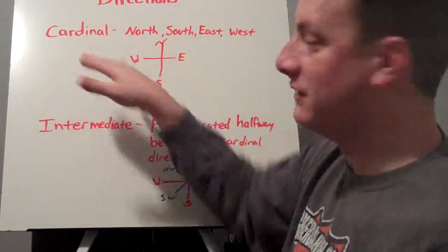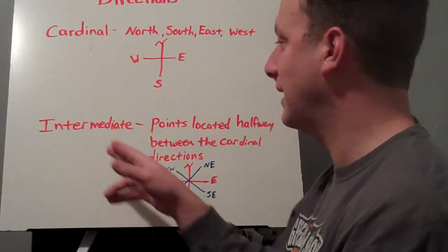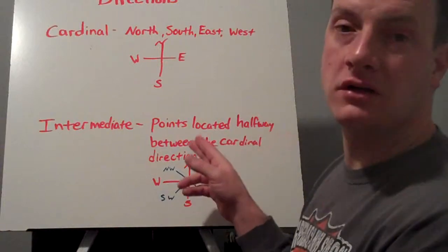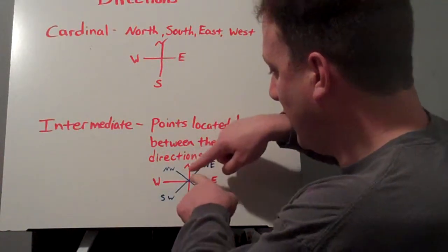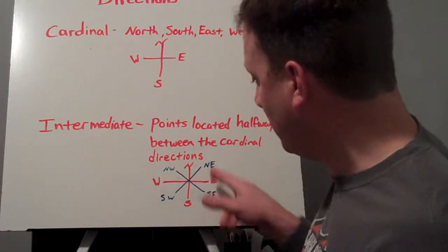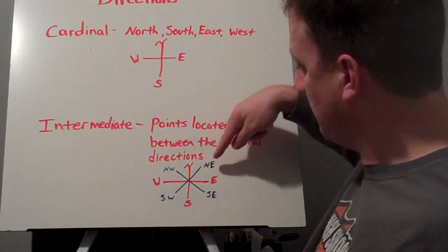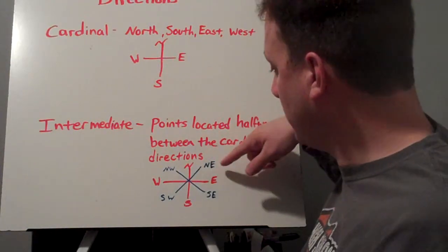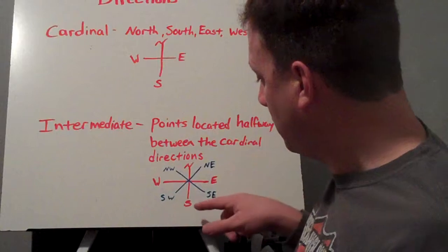Now your intermediate directions—these are identified on a map. They're called the points located halfway between the cardinal directions. Okay, so for example, on here in red I have north, south, east, and west. Well, we need to talk about the spaces in between. What are these called? Well, if it's in this part up here, obviously that's between north and east. We call that northeast.